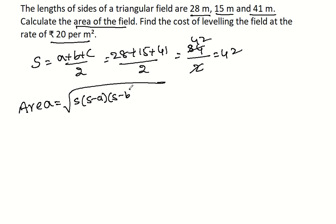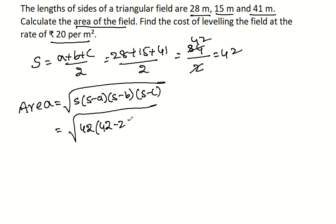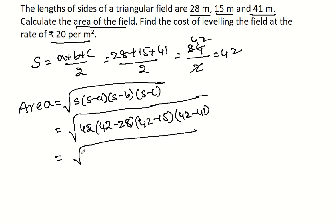The area formula is the square root of s times (s minus a) times (s minus b) times (s minus c). Substituting: square root of 42 times (42 minus 28) times (42 minus 15) times (42 minus 41), which gives square root of 42 times 14 times 27 times 1.